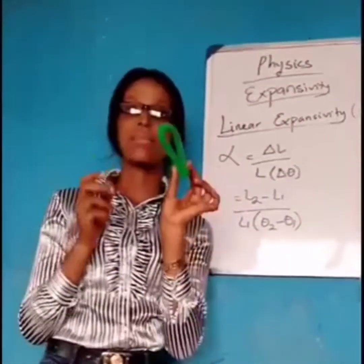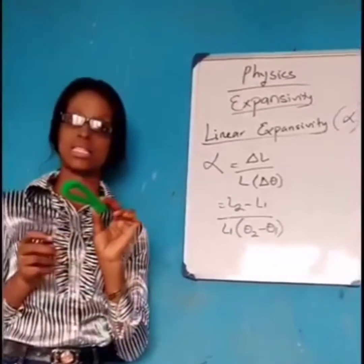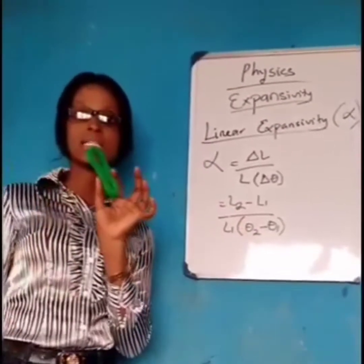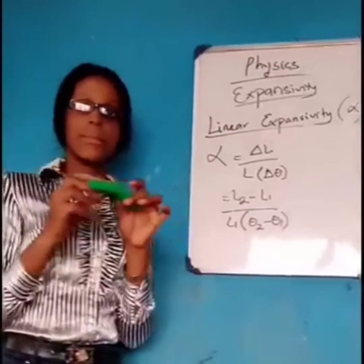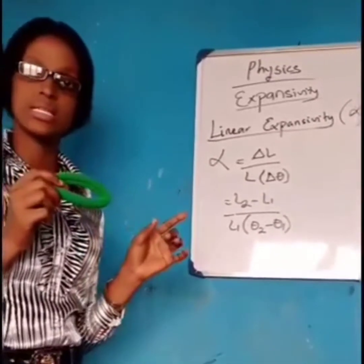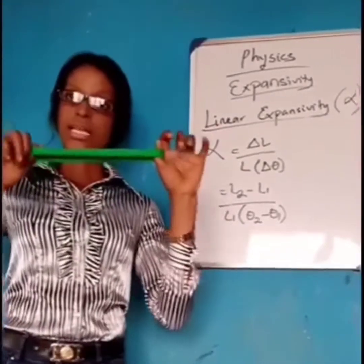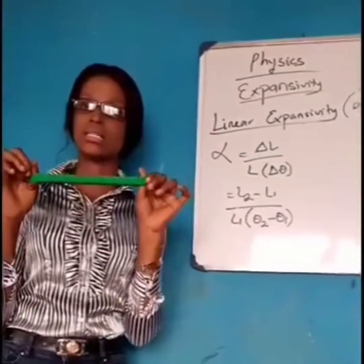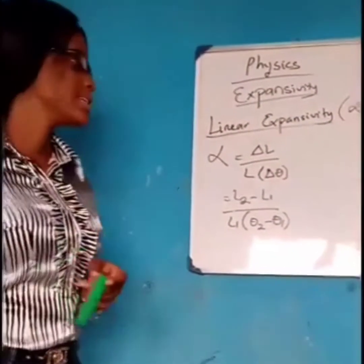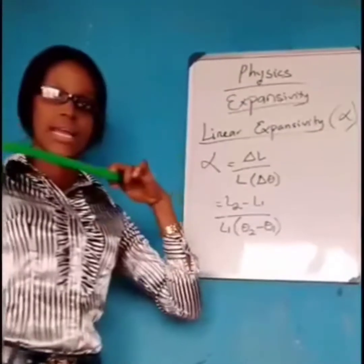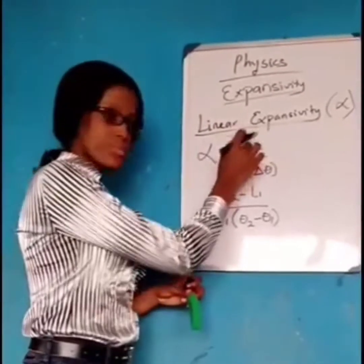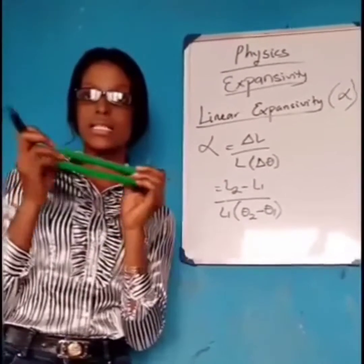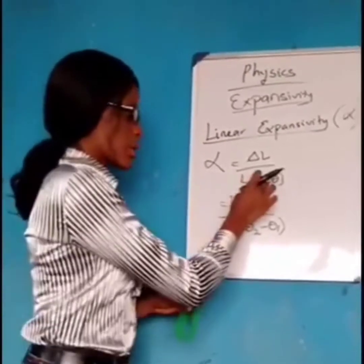Let's assume this hairband is a substance that can undergo linear expansivity. At this size, this is L1, which is the initial length, and it has its own temperature theta 1. By the application of heat, which can cause linear expansivity, it can attain a new length. This new length is our L2, and that temperature at which this new length is attained is our theta 2. Therefore, the difference between the final length and the initial length is our change in length, while the difference between theta 2 and theta 1 is our change in temperature.